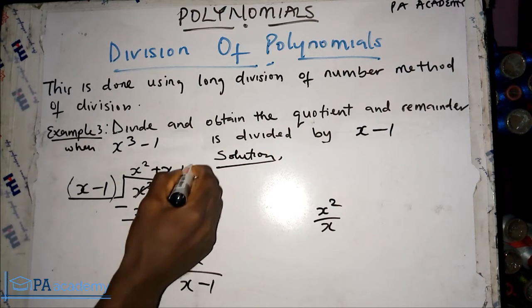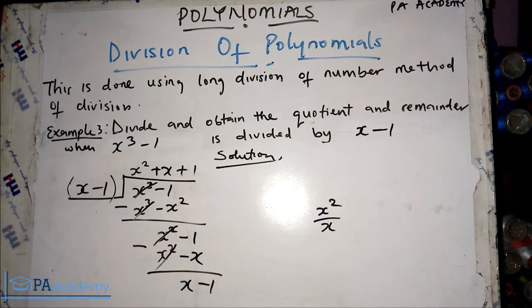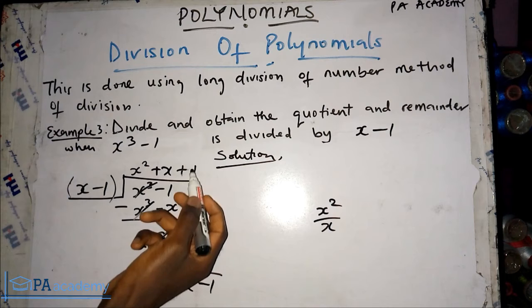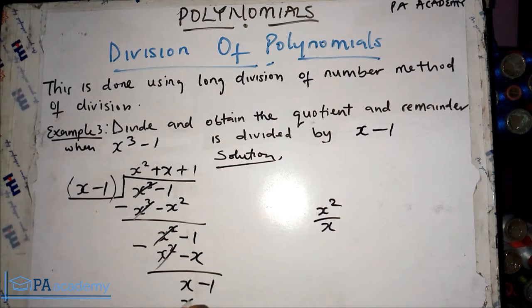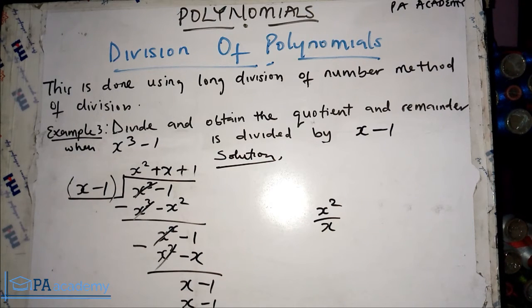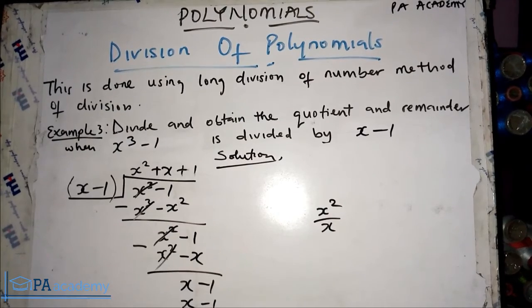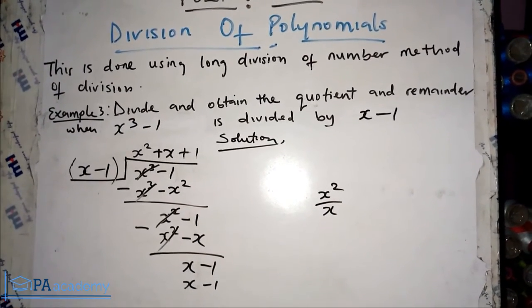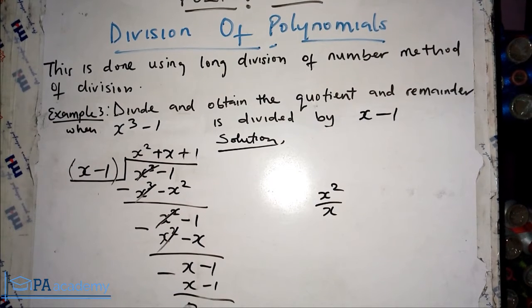We add plus 1 to the quotient and use it to multiply the divisor: 1 multiplied by x gives x, and 1 multiplied by minus 1 gives minus 1. By the time we subtract, x minus x is zero and minus 1 minus minus 1 is also zero. Our remainder is zero.